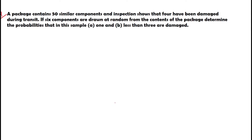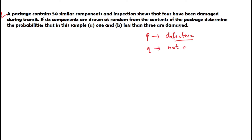This video will solve one problem based on the binomial distribution probability chapter. This is based on an industrial case where we consider P as the defective one, and Q — which is 1 minus P — as the not defective or satisfactory one.